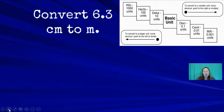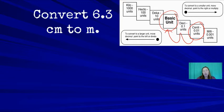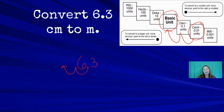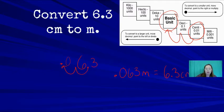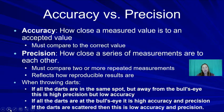Converting 6.3 centimeters to meters: centimeters to meters is two places to the left, so 6.3 centimeters = 0.063 meters. It's important to always include units at the end of your measurement — you can't lose them, because people need to know what you're talking about.